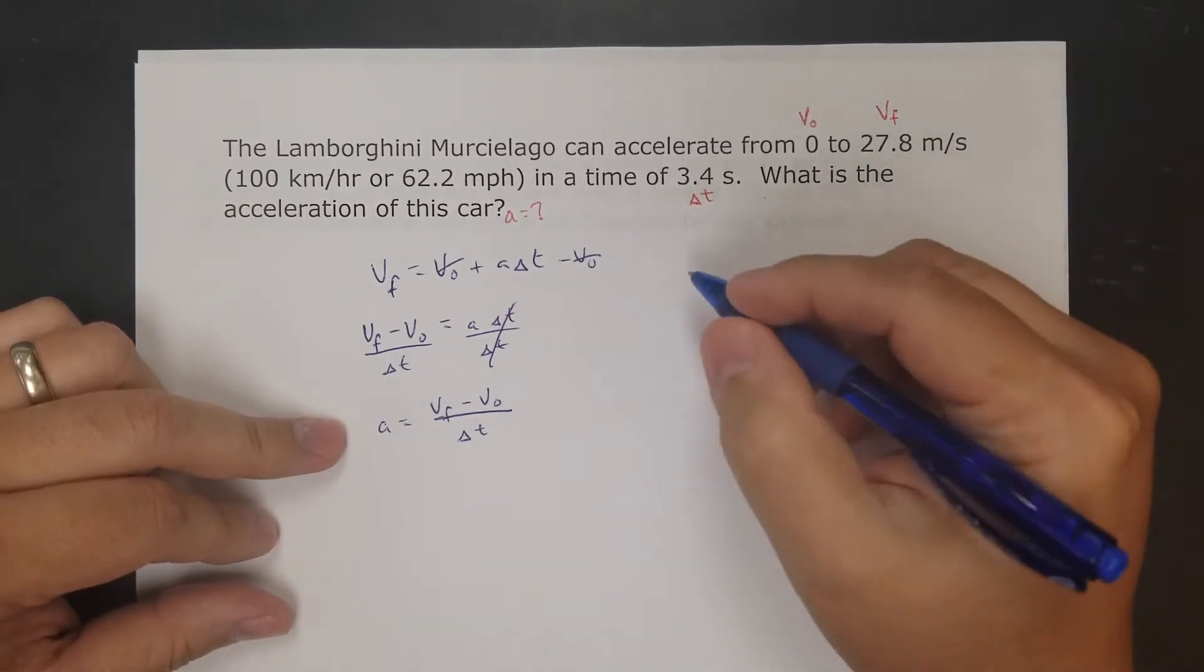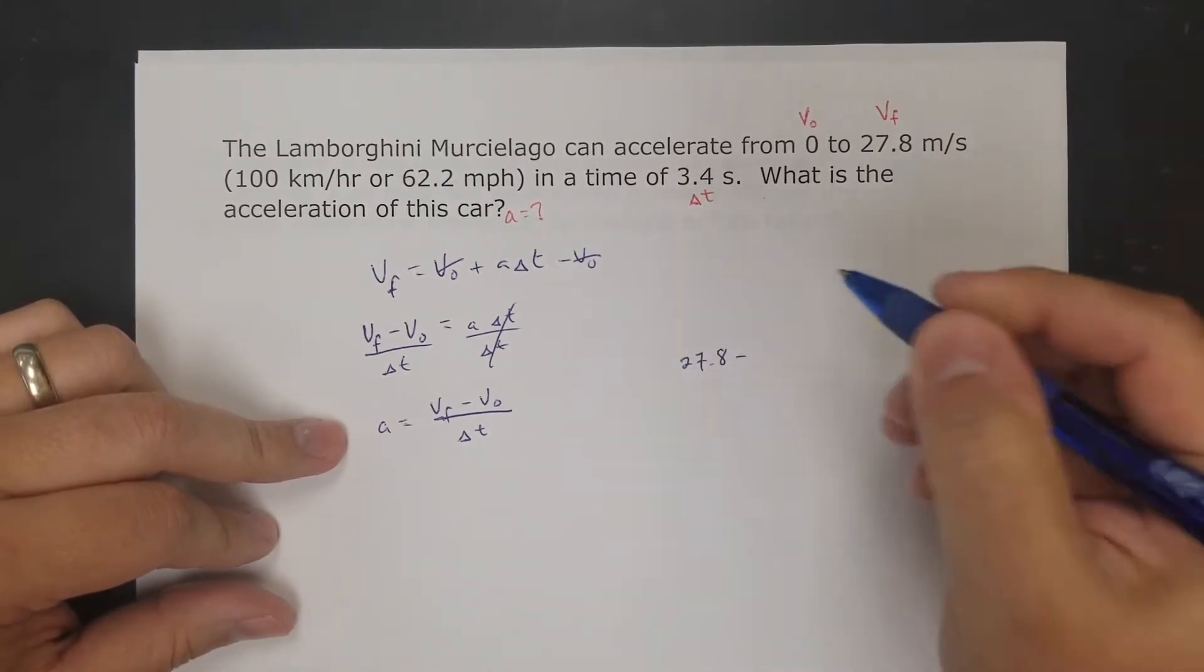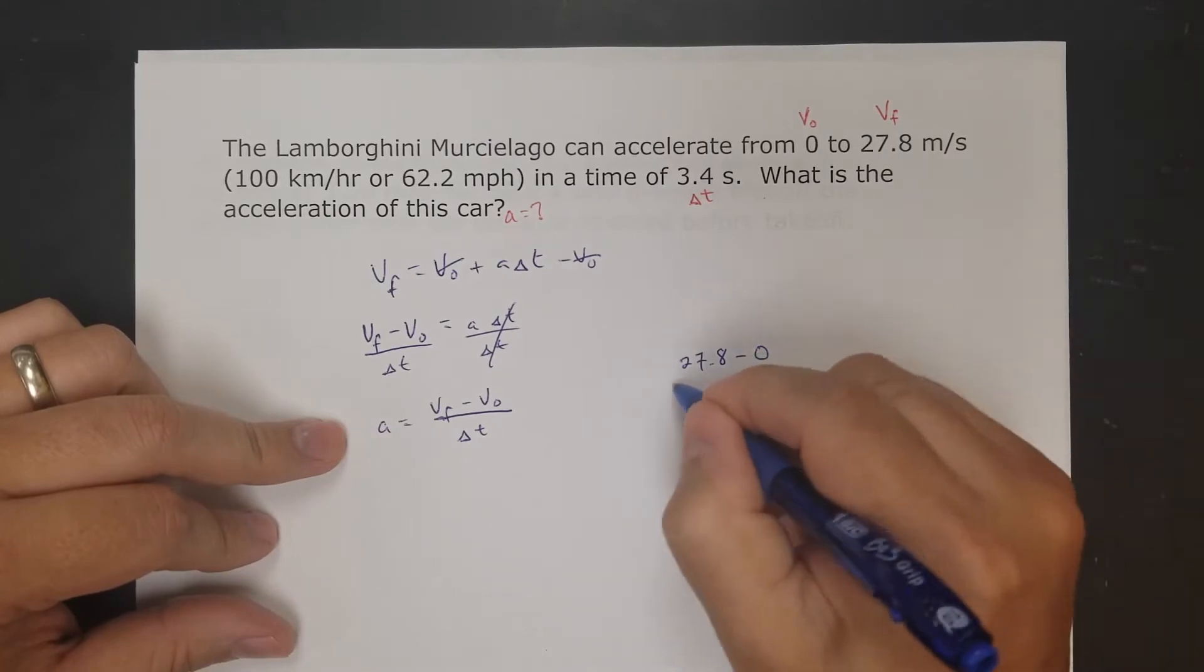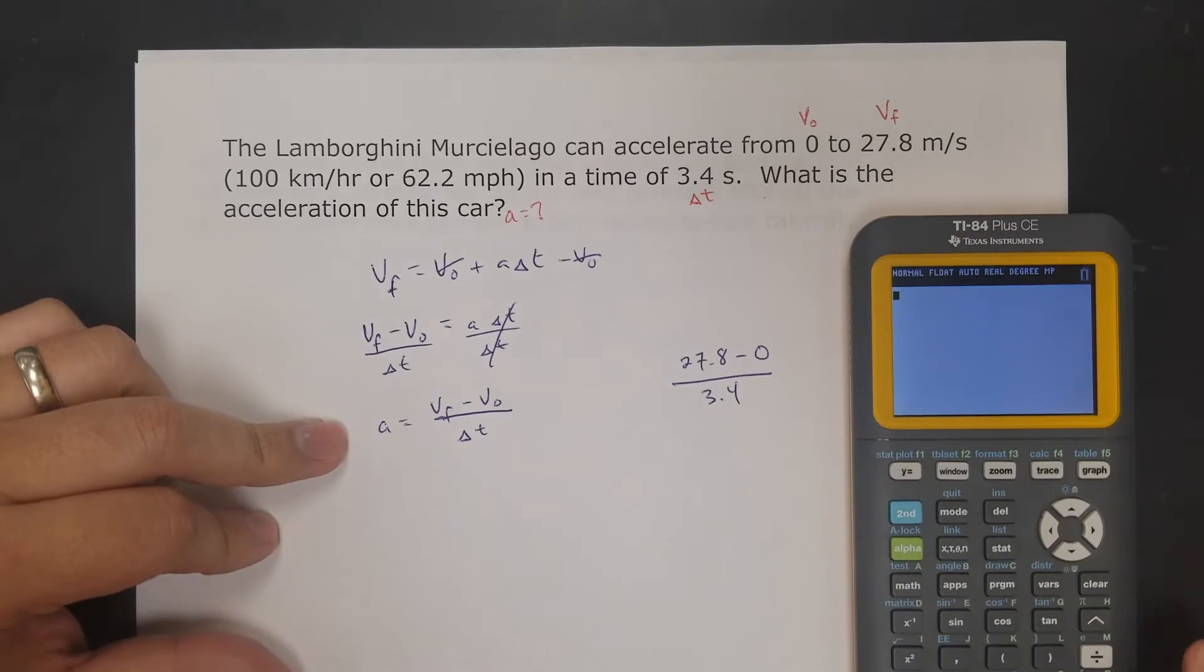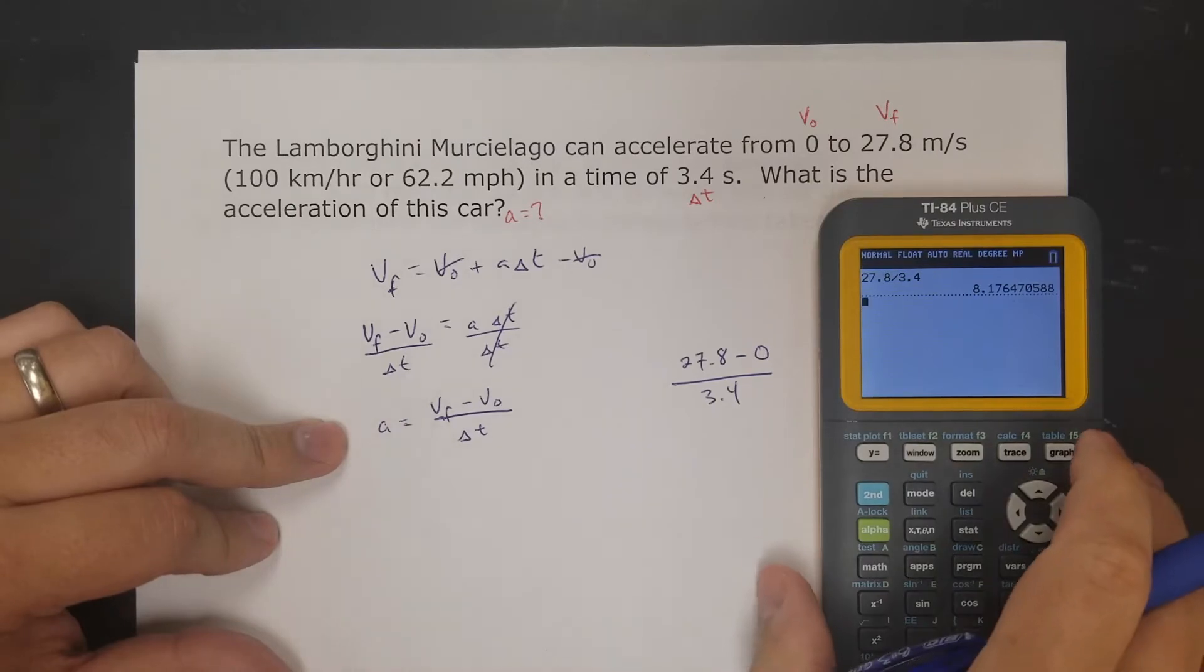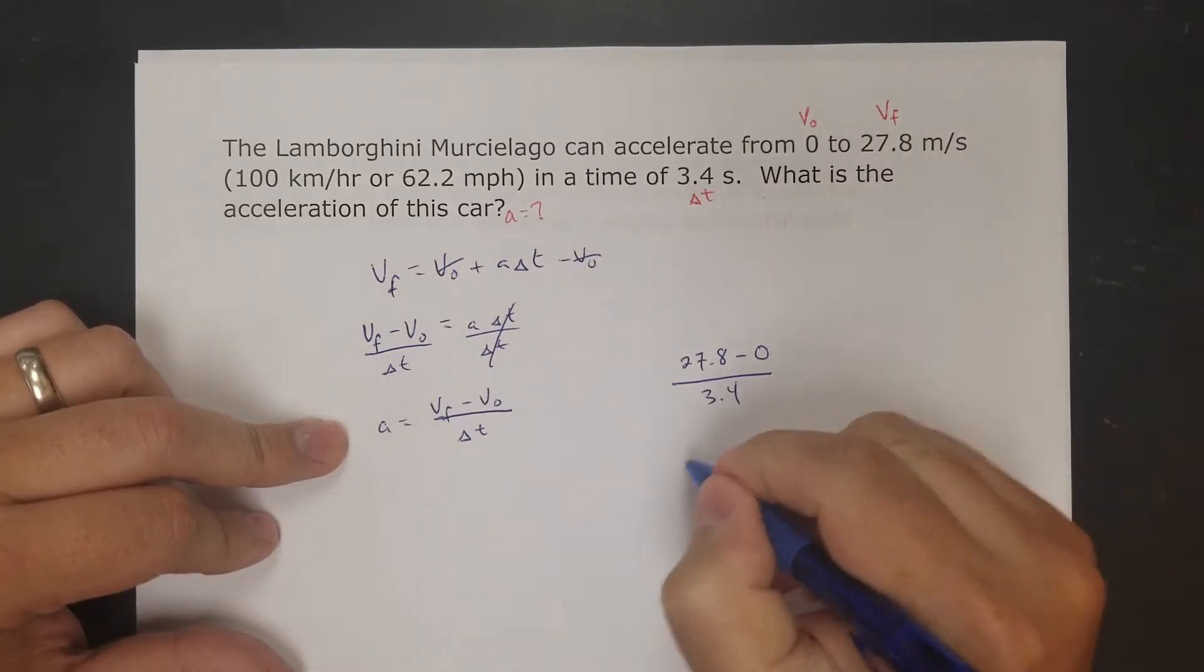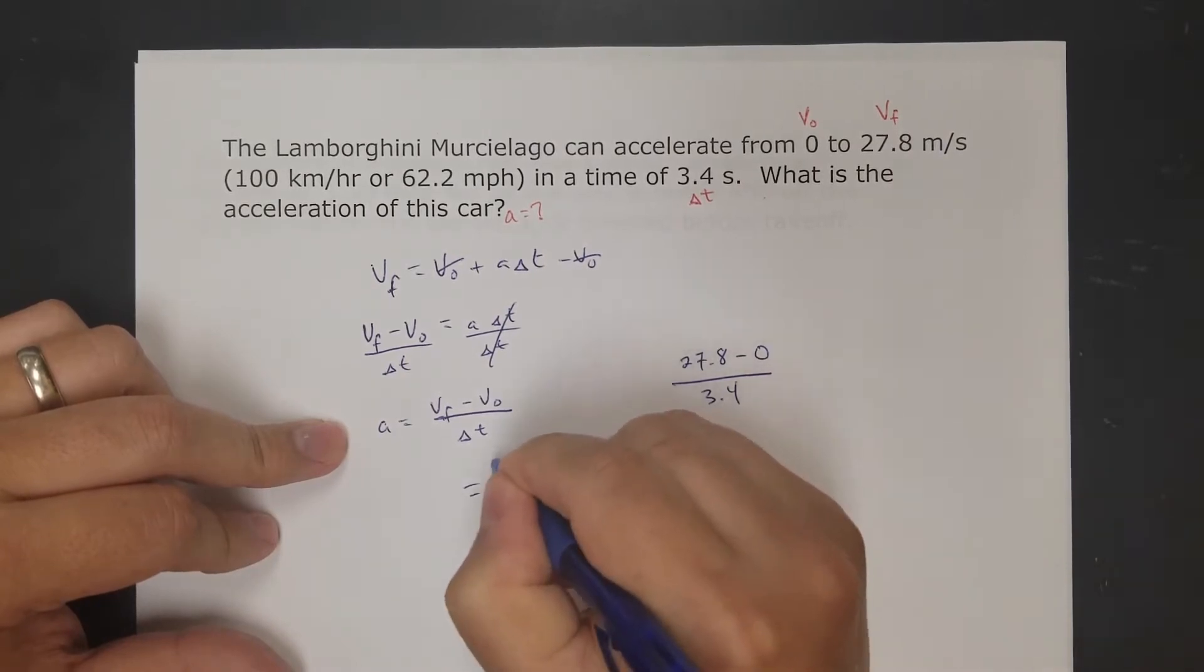Now I can plug my numbers in and solve. Final velocity is 27.8, initial velocity is 0, time interval is 3.4. If you do that, it's just 27.8 over 3.4, you get 8.18. So the acceleration is 8.18 meters per second squared.